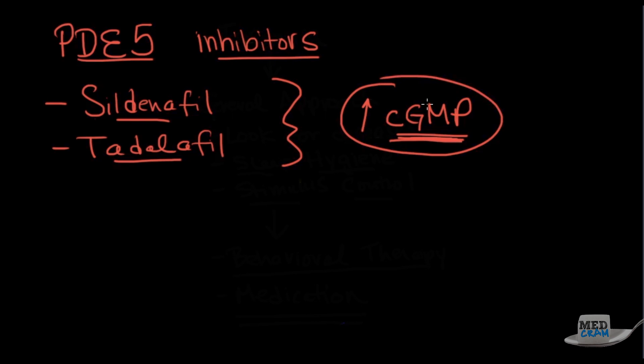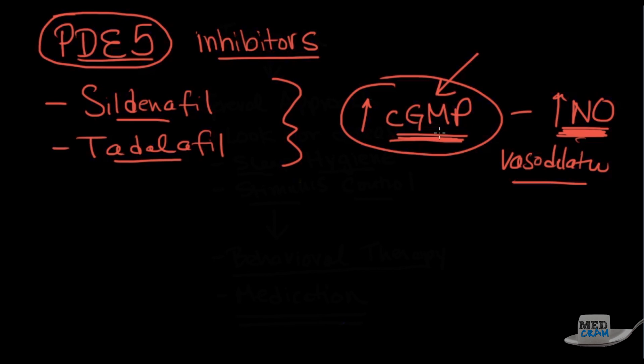And so what happens is cyclic GMP goes up, which stimulates an increase in nitric oxide. And it's nitric oxide, which is a vasodilator. So there's a couple of other things that also increase vasodilation, and that would be like an alpha blocker or nitrate. So you should not be on these medications at the same time. These PDE5 inhibitors cause vasodilation in the pulmonary vasculature by increasing nitric oxide. And they do it specifically by inhibiting the breakdown of cyclic GMP.